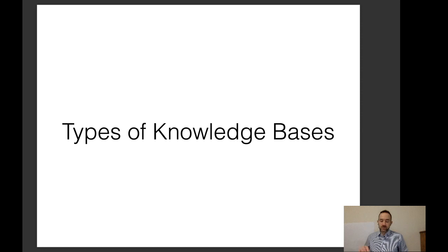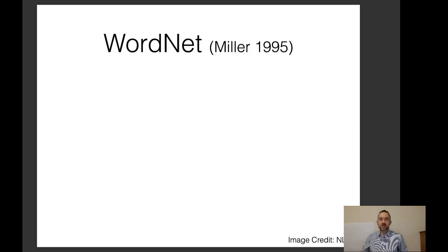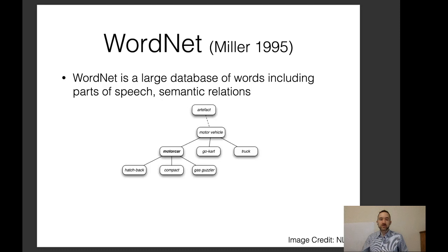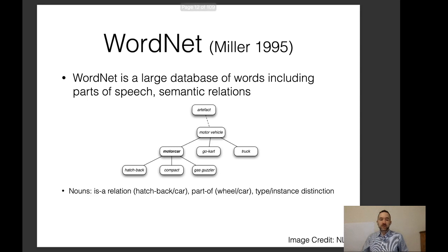Let's go to types of knowledge bases. A first attempt at a knowledge base I've already talked about in this class is WordNet, which is a large database of words including parts of speech and semantic relations. For example, between nouns you might have an is-a relation — a hatchback is a type of car — or a part-of relation, where a wheel is a part of a car.